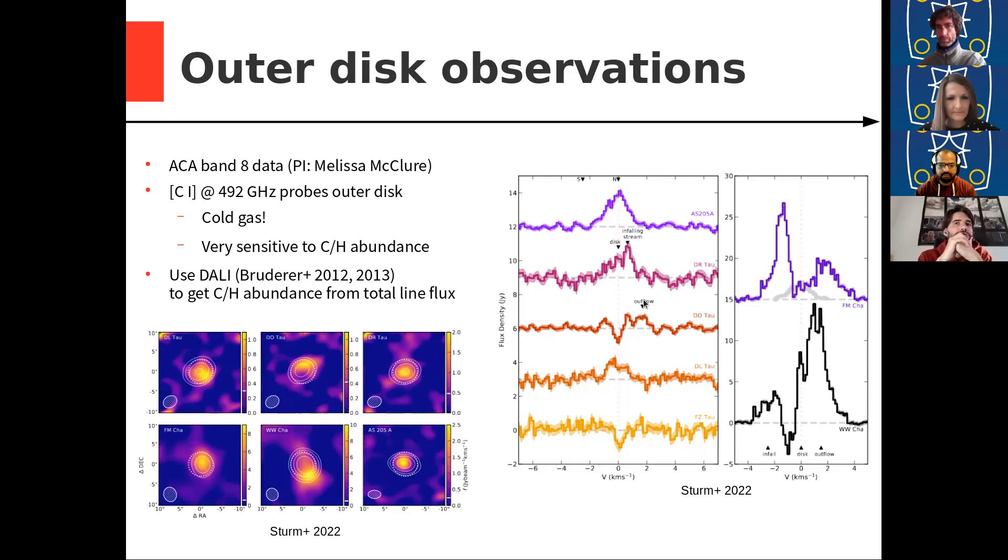So in DQ Tau, for example, this outflow is associated with an outflow that's also seen in 12CO. And in DR Tau, we see some signatures of inflow. And we use DALI, a physical chemical code, to basically get the carbon abundance from the total line flux.